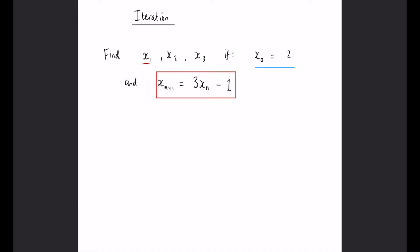Now this notation can seem quite confusing to a lot of people, so let me explain it. When we have x_0 we know that that equals 2. So for the first iteration that we're going to complete, let's let n equal 0. So notice if you sub these in here, when n is 0, x_n is going to be x_0 and we know that x_0 is 2. So that means we have to use the x_0 they've given us, multiply it by 3, take away 1, and if n is 0 here, that is going to give us x_1. So that's exactly what we're going to do first.